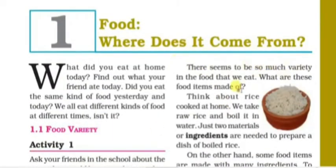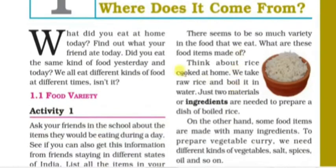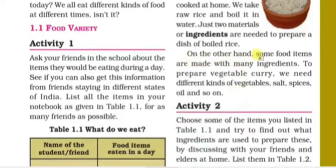There seems to be so much variety in the food that we eat. We take raw rice and boil it in water — just two ingredients are needed to prepare a dish of boiled rice. On the other hand, there are many food items that need a lot of ingredients.